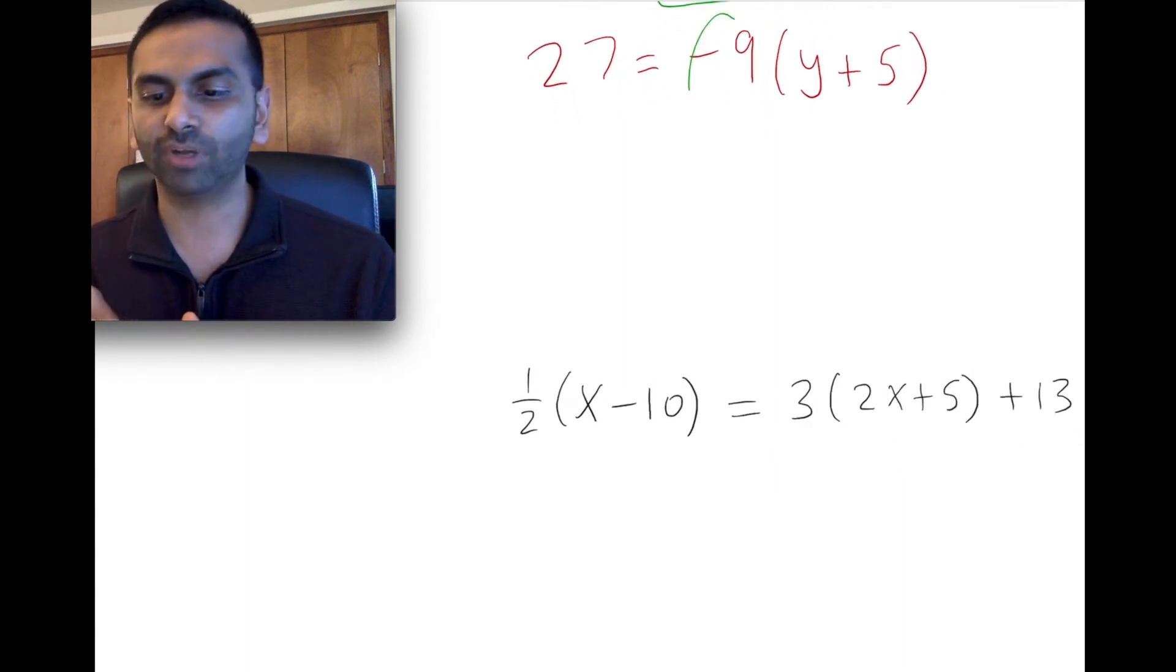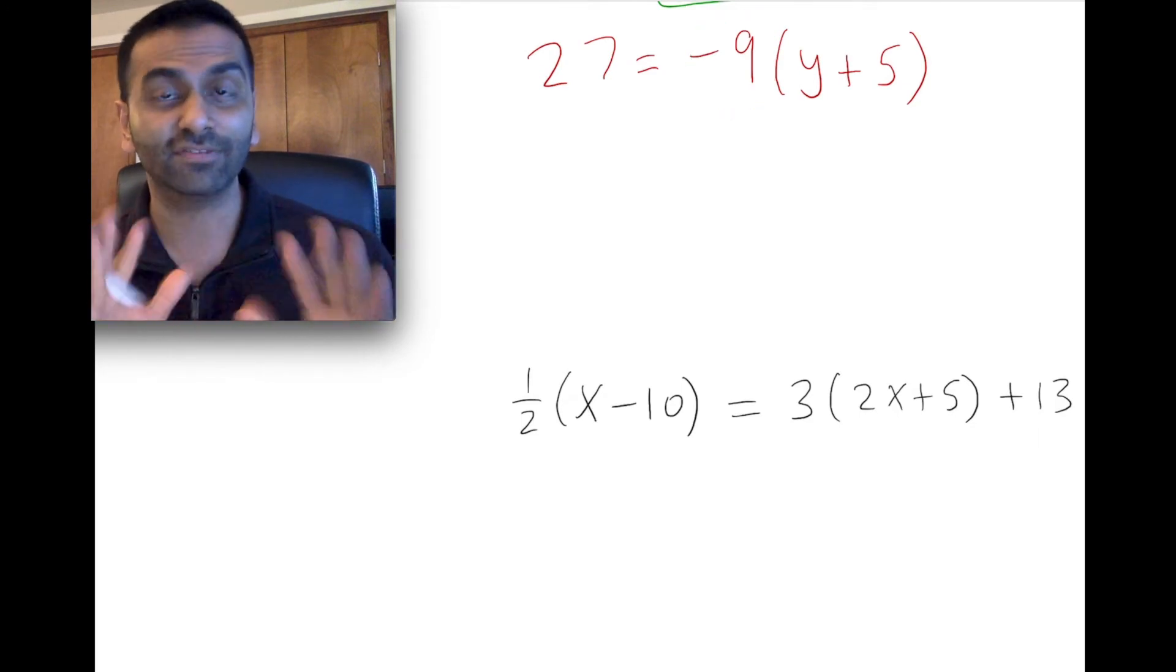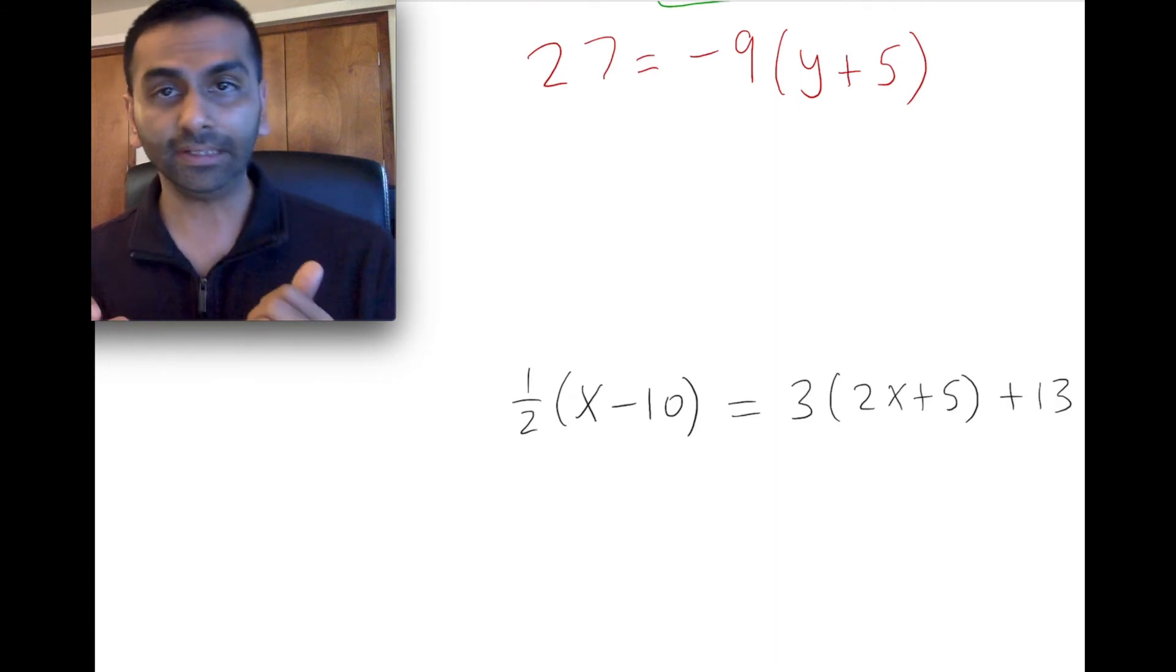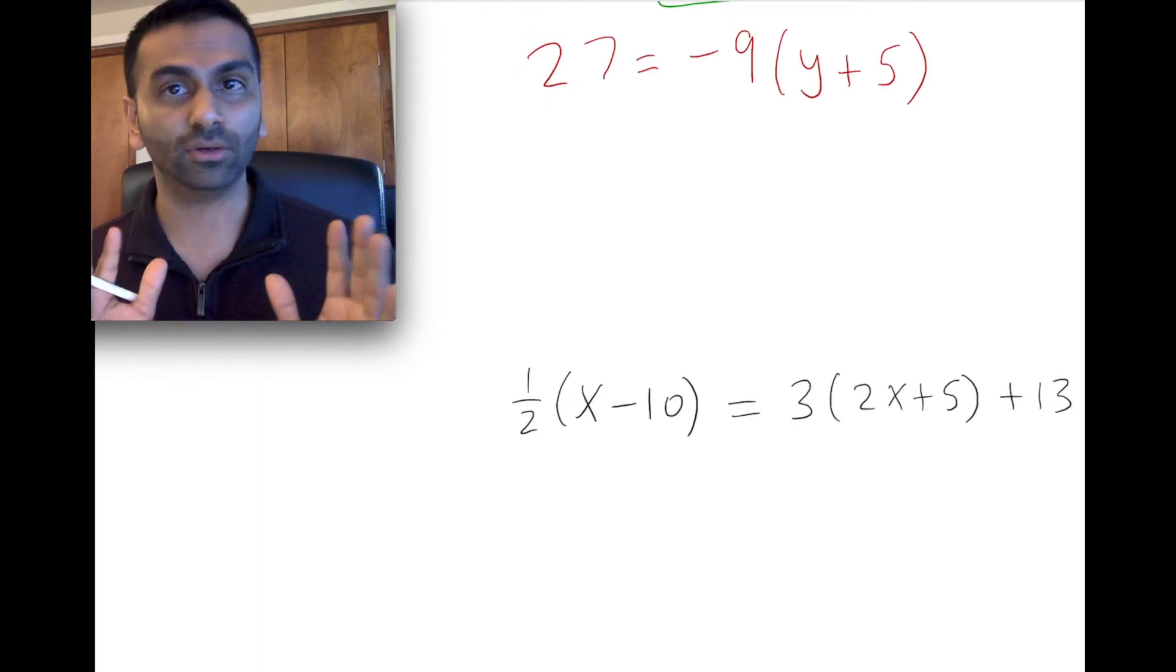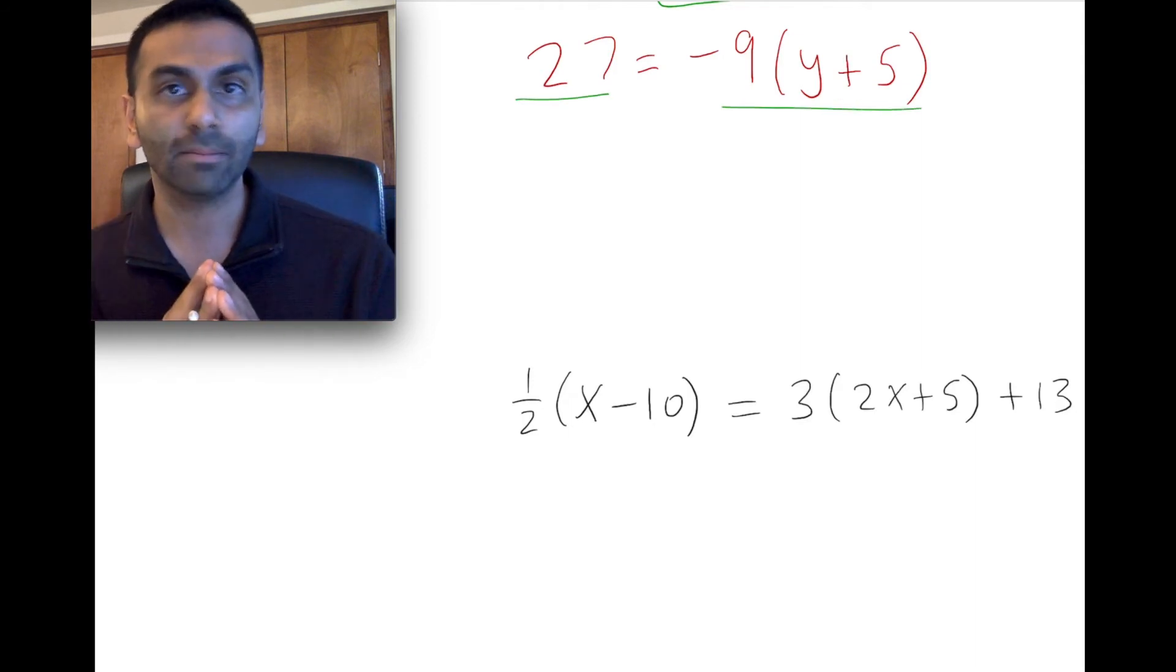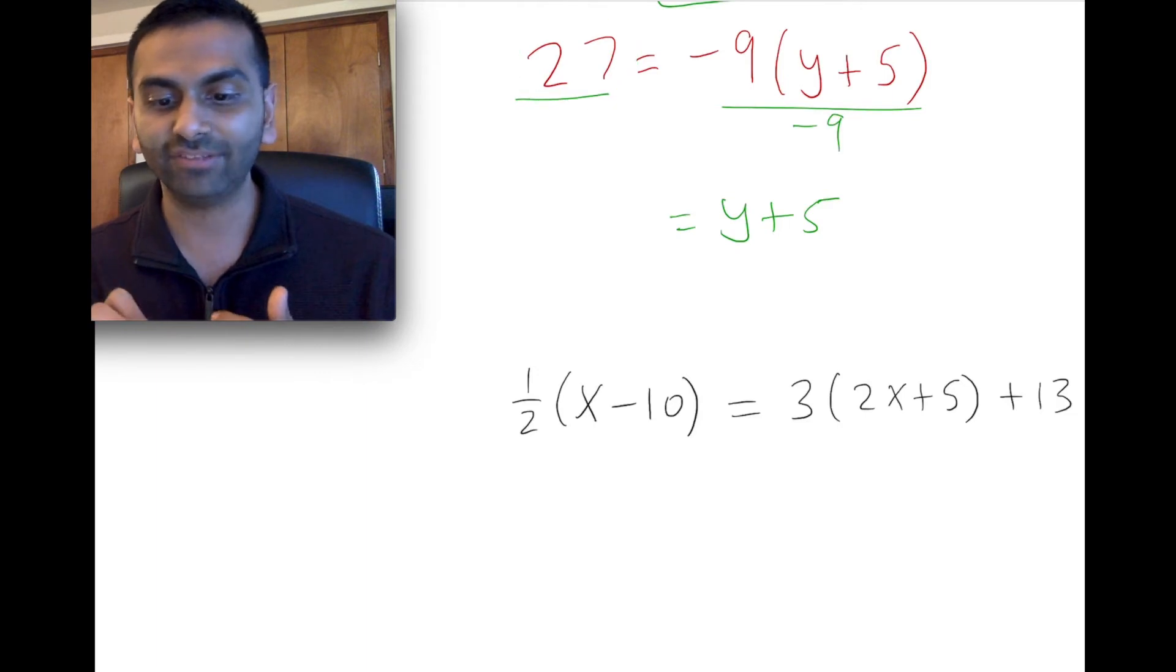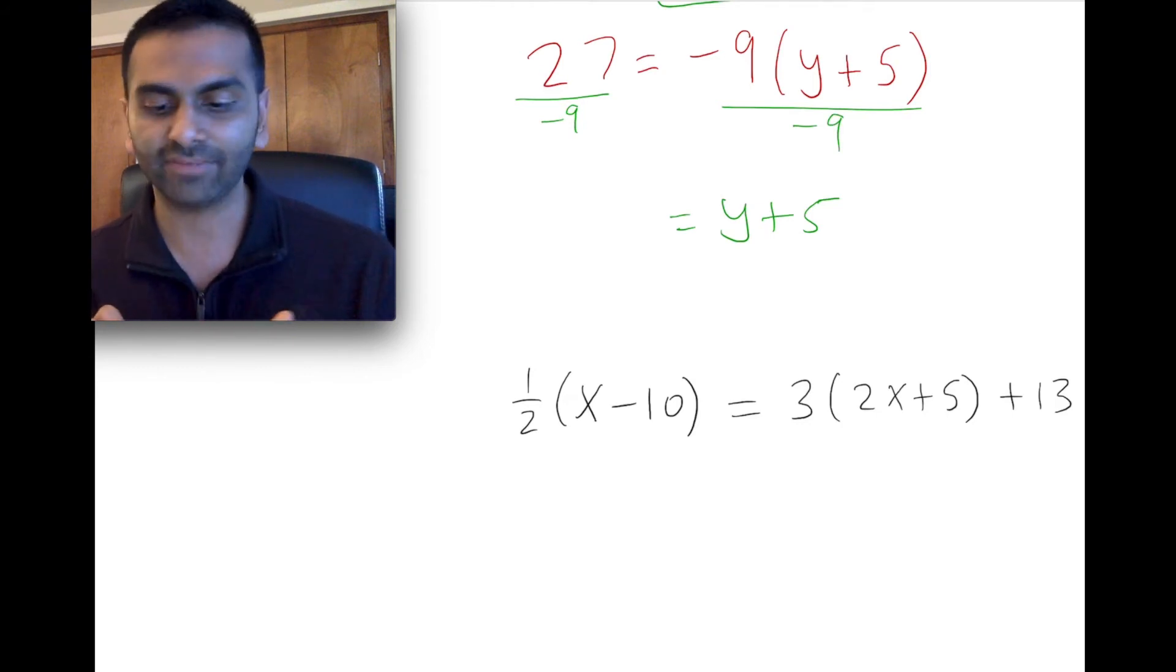Whenever you have a constant multiplied to the entire side of the equation, instead of distributing, one other technique that's possible is to get rid of that constant in case the numbers are nice and divisible. That's always an option if it makes sense for that problem. You're going to have to be smart and strategically choose when you want to do that. So here, negative 9 with the 27 is divisible. So here's what I'm going to do. I'm going to divide both sides of this equation by negative 9. So this whole thing, negative 9 times something, divided by negative 9, the negative 9s just cancel, and I'm left with just y plus 5 here. Now, on the left-hand side, 27 divided by negative 9, let's see, 27 divided by 9 is 3, so 27 divided by negative 9 is going to be negative 3.